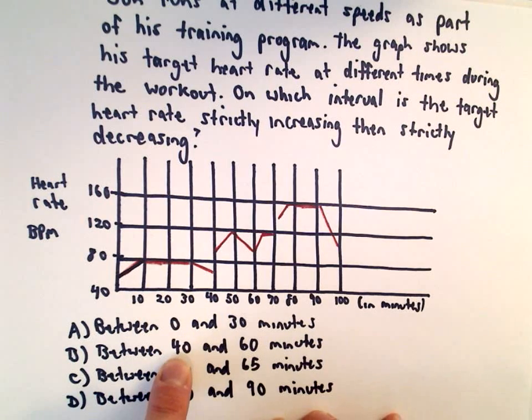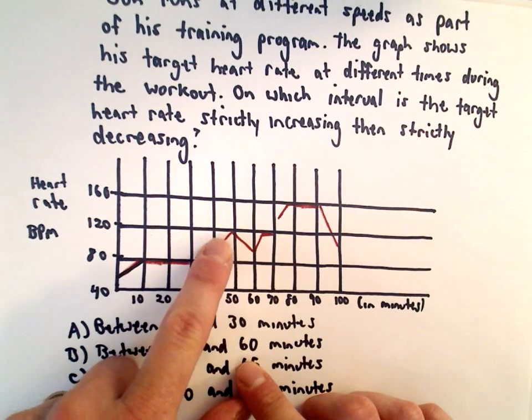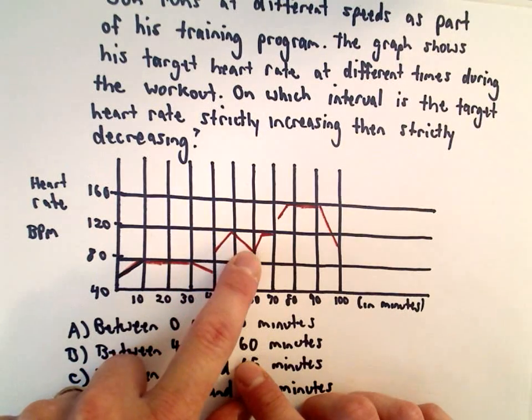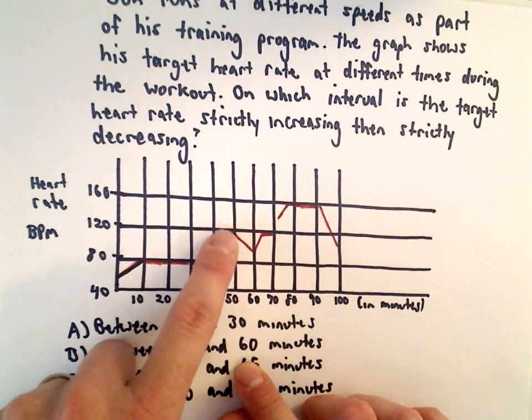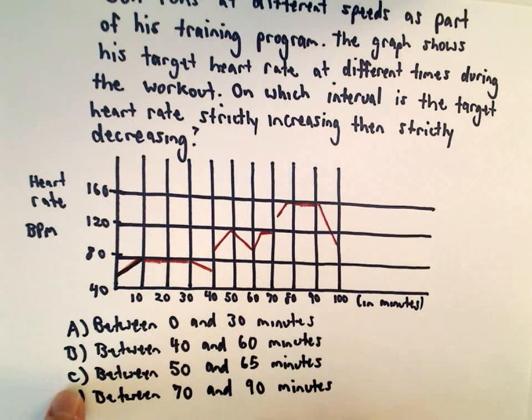Answer choice B says between 40 and 60 minutes. Well, starting at 40 minutes, his heart rate is going up, up, up, then it's going down, down, down. So it's strictly increasing then strictly decreasing, so part B looks like the correct answer to me. Let's check out C and D just to see what they say.